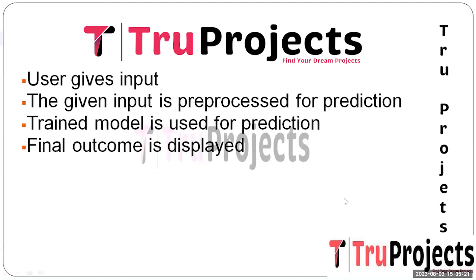User-provided data undergoes pre-processing including feature extraction. We enter user input through a Flask interface as the tool to detect money laundering predictions. The given input is pre-processed for prediction — user-provided data undergoes pre-processing including feature extraction, normalization, and formatting to align with the trained model's requirements. The trained model then analyses the pre-processed input to predict the likelihood of money laundering, considering identified patterns and attributes. Finally, the model's prediction outcome is displayed to the user through the Flask interface, indicating the potential presence of money laundering activity.